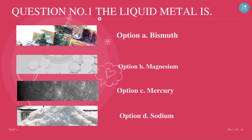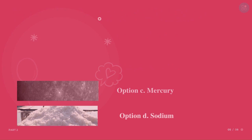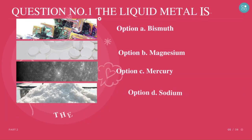Question number 1. The liquid metal is? A. Bismuth. B. Magnesium. C. Mercury. D. Sodium. The correct answer is C. Mercury.